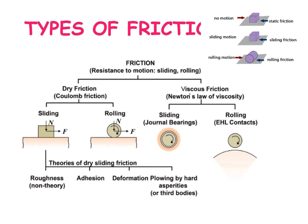What are the types of friction? Basically it is divided into dry friction and fluid friction. Dry friction is further divided into sliding friction and rolling friction. For example, an automobile on the road is an example of rolling friction. If you slide any object or push or pull any object, that is an example of sliding friction.